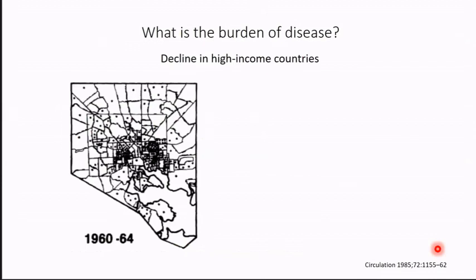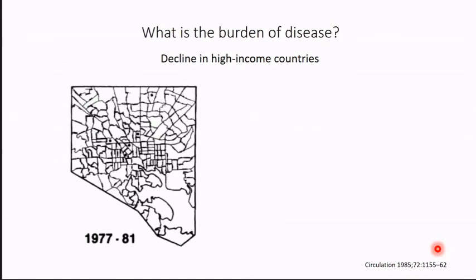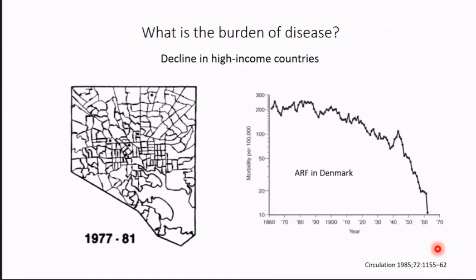Coming to the burden of disease — this is how the decline of ARF happened in the West, in high-income countries. This is Baltimore 10 years later, when people started receiving penicillin for treatment of sore throat, and it virtually disappeared in the United States. This is Denmark, a high-income country, and you'll see there was a gradual reduction in ARF and RHD over two decades, in the 1940s and 50s.